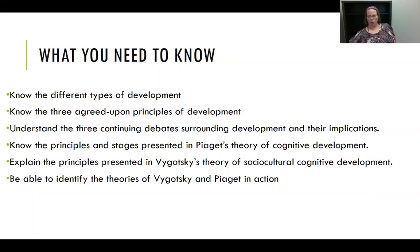This week the things you need to have down are: to know the different types of development, to know the three agreed-upon principles of development, to understand the three continuing debates surrounding development and their implications, to know the principles and stages presented in Piaget's theory of cognitive development, to explain the principles in Vygotsky's theory of social-cultural cognitive development, and to identify the theories of Vygotsky and Piaget in action.